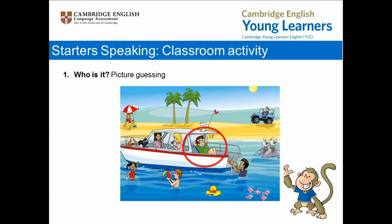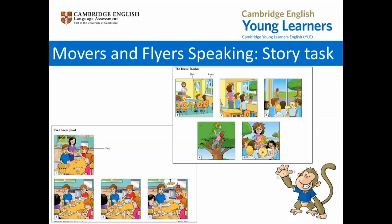Now let's think about the changes to the speaking test at movers and flyers. There's just one change I'd like to tell you about. This relates to the story task, which is Part 2 in the Movers speaking test and Part 3 in the Flyers speaking test. Instead of just hearing the title of the story and the names of the main characters, these will now be written on the story prompt itself. 'Fred loves food' is the title of the Movers story, and Fred is the main character. While in the Flyers example, 'The Brave Teacher,' there are two main characters — Nick and Anna — both of whom are clearly labelled on the prompt.